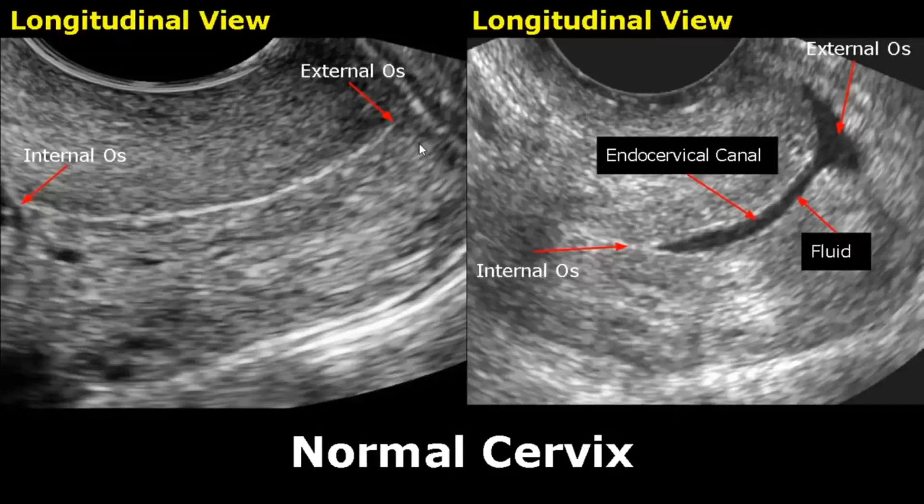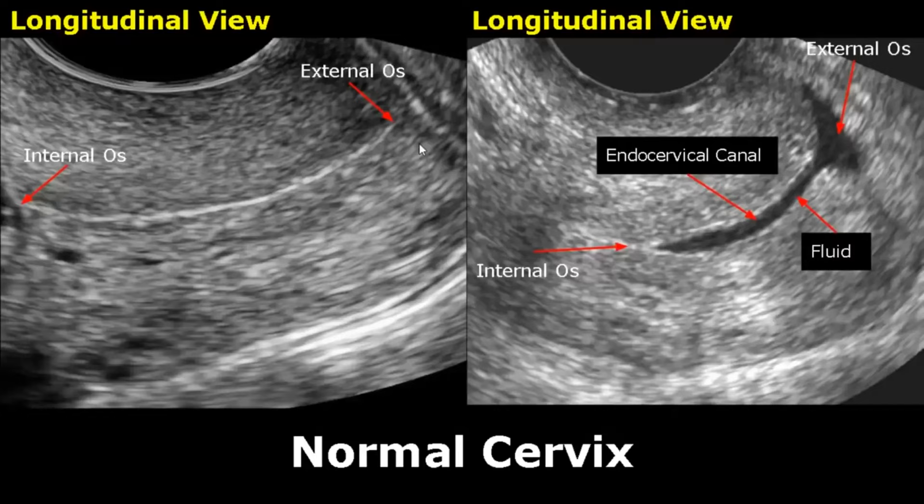Hello everyone, this is Dr. Sam and this video is about cervix ultrasound. The cervix is the lower end of the uterus and is often overlooked when scanning, but it is important to view it. These are transvaginal images of the cervix in longitudinal view.